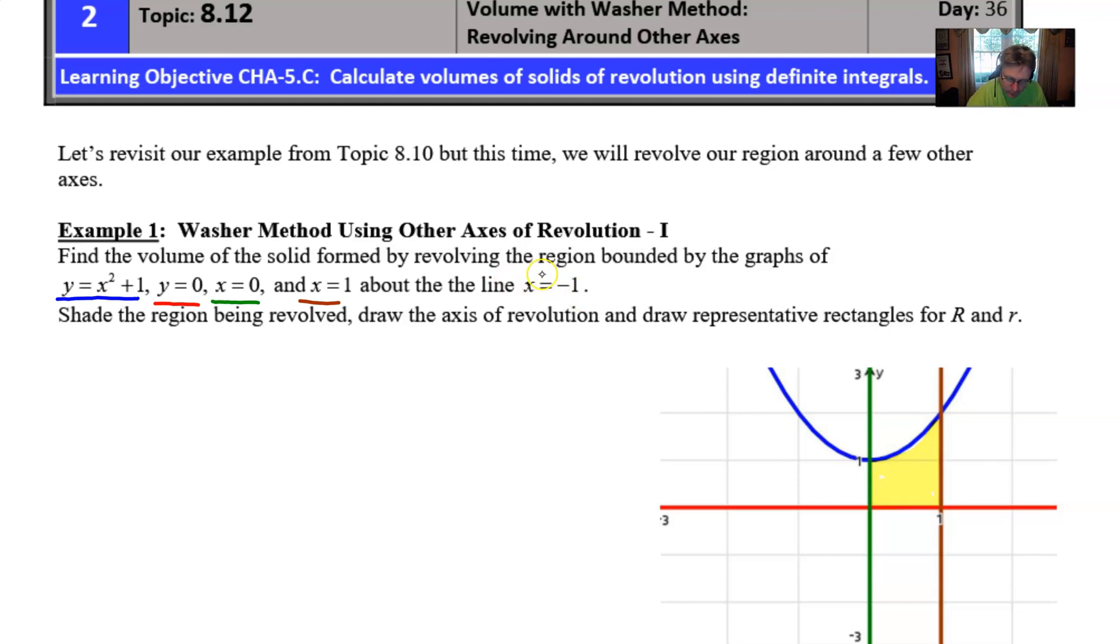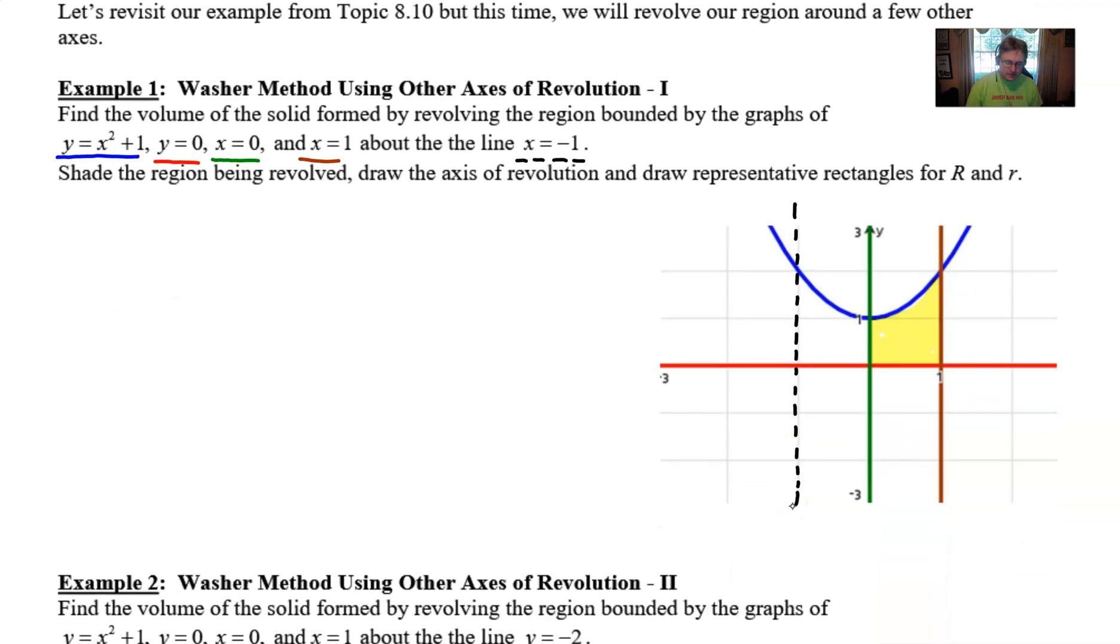And then it says that we're going to revolve around the line x equals negative 1. Well, if we find where x equals negative 1 is, we'll notice that that is this vertical line right over here. That is your x equals negative 1. So for our setup, what we're going to have to do is think about how the rectangles are going to be drawn. The very initial thing that you're going to consider is the fact that your rectangles will always emanate from the axis of revolution. So in this particular case, that would be this dashed line.